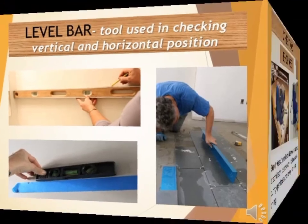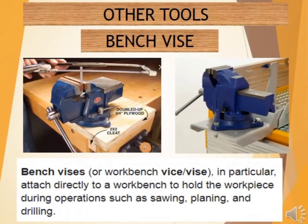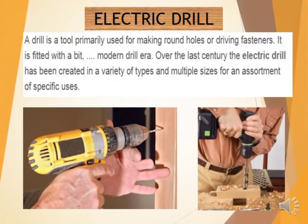Then, we have other tools. The Bench Vise — a bench vise is attached directly to a workbench to hold the workpiece during operations such as sawing, planing, and drilling. Then, we have an Electric Drill — a drill is a tool primarily used for making round holes or driving fasteners. It is fitted with a bit. Over the last century, the electric drill has been created in a variety of types and multiple sizes for an assortment of specific uses.